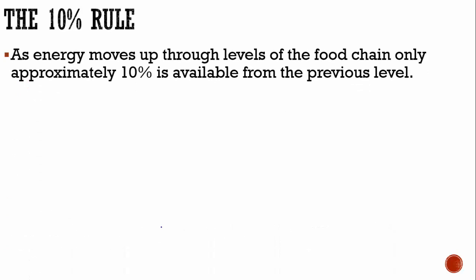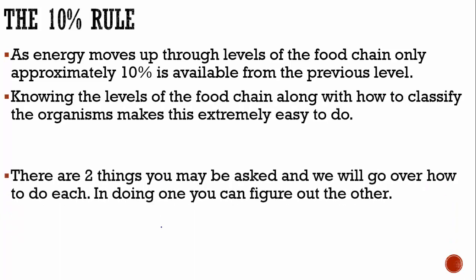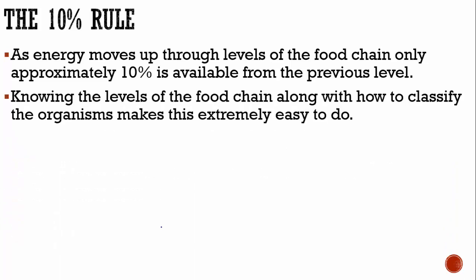I call it the 10% rule — you can call it whatever you want. As energy moves up through levels of the food chain, only approximately 10% is available from the previous level. Knowing the levels of the food chain along with how to classify the organisms makes this extremely easy to do.